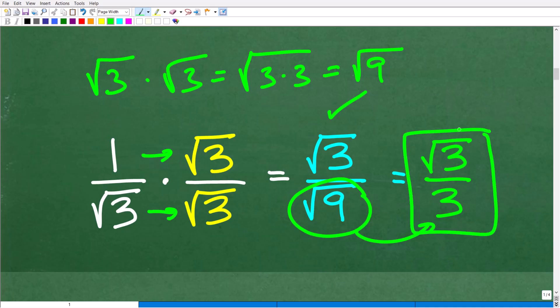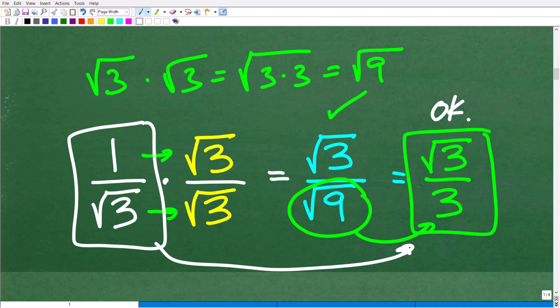So now, this expression right here, 1 over the square root of 3 is equivalent to this, the square root of 3 over 3. Okay, and this is okay, perfectly fine, because we do not have an irrational number in the denominator.